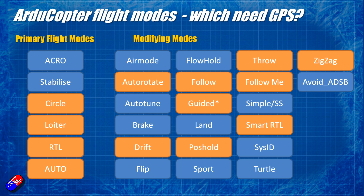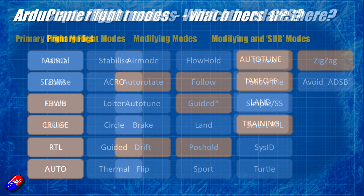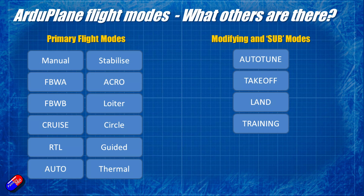Next up is ArduPlane. ArduPlane has an awful lot less in terms of modes. Some will have the same names as what we've just looked at — like Acro, Stabilize, Loiter, Circle, Return to Launch, and Auto — but there are some new ones as well as some extra sub-modes.